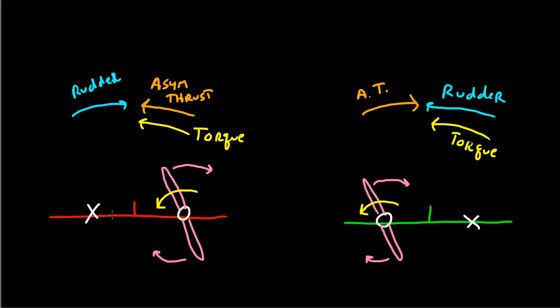So, in a conventional twin-engine airplane, it's worse to have your left engine fail because torque will contribute. There you go. Torque will contribute to asymmetric thrust. Over here, in a conventional twin, if your left engine continues to run, torque will help counteract asymmetric thrust.